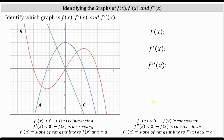Whether we've been finding derivatives using the limit definition of the derivative or the power rule, when determining the derivative of a polynomial function, the degree drops by one when we find the derivative. So looking at the given functions, notice we have a linear function, which is degree one, a quadratic function, which is degree two, and what appears to be a cubic function, which is degree three.